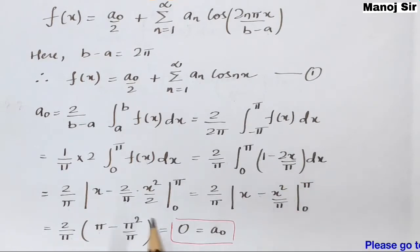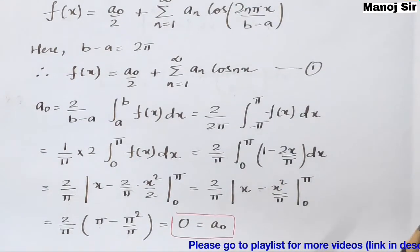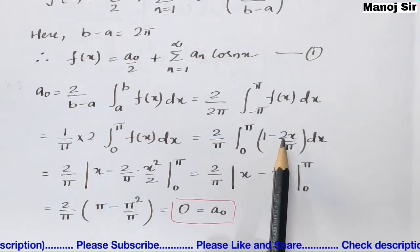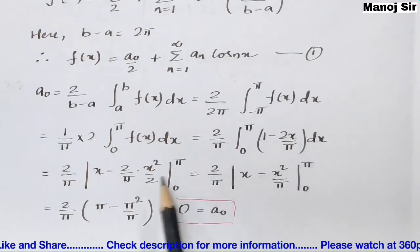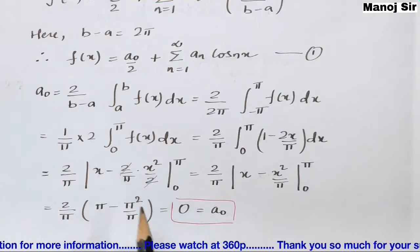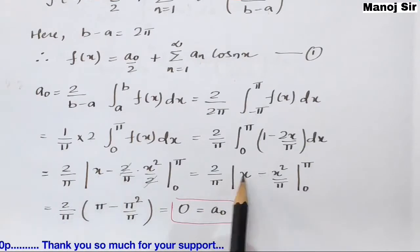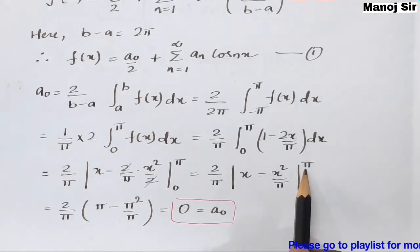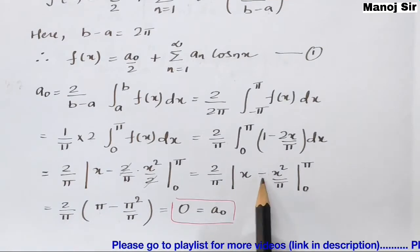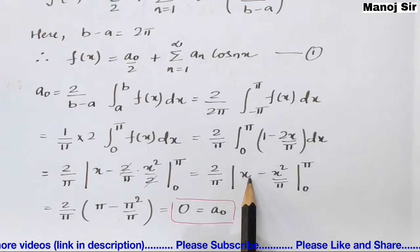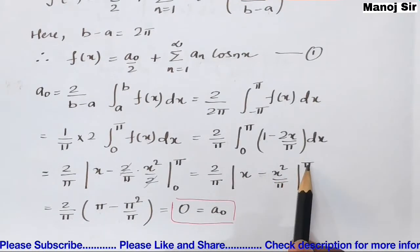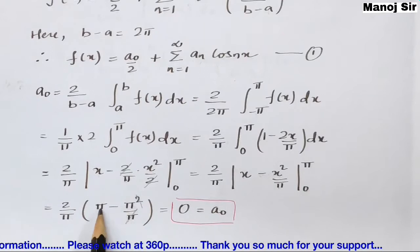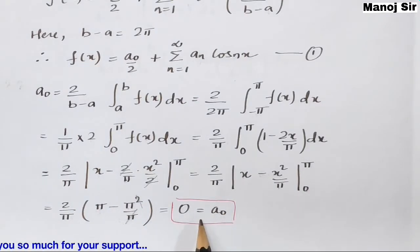Integrating: a₀ = (2/π) ∫_0^π (1 − 2x/π) dx = (2/π) [x − x²/π]_0^π. Putting in the upper limit π: π − π²/π = π − π = 0. So a₀ = 0.